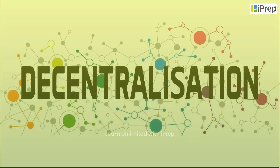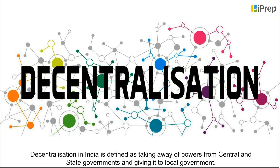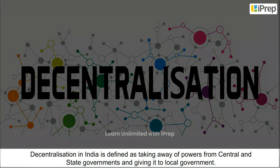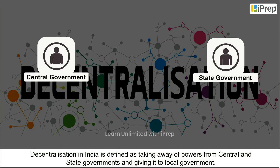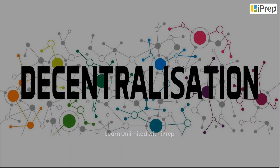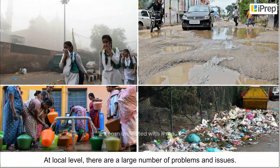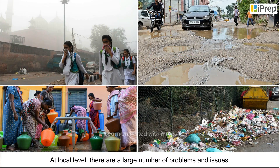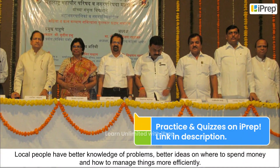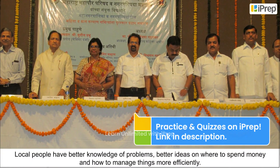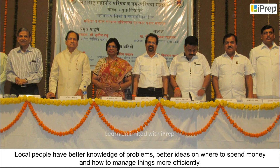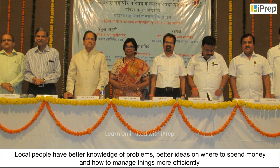Decentralization of government in India is defined as taking away of powers from central and state governments and giving it to local government. The main objective of decentralization is that at the local level there are a large number of problems and issues. Local people have better knowledge of problems and better ideas on where to spend money and how to manage things more efficiently.